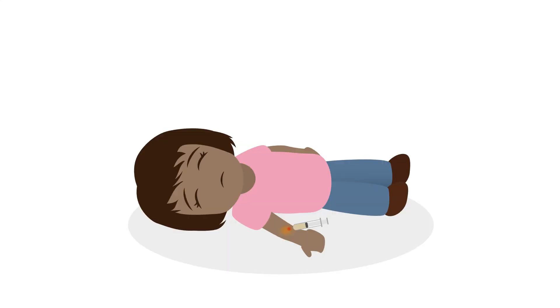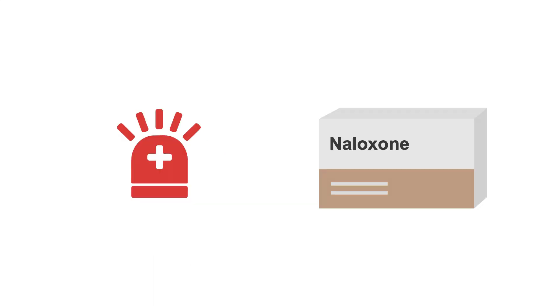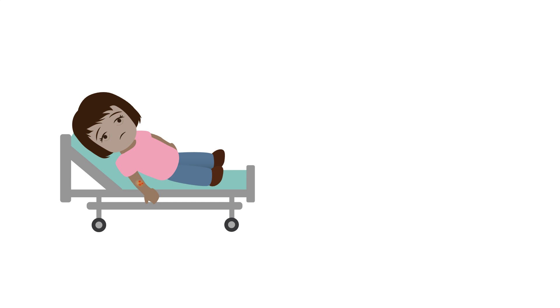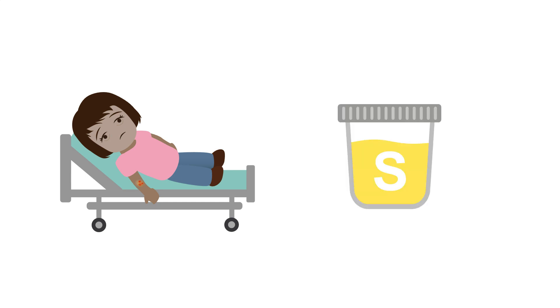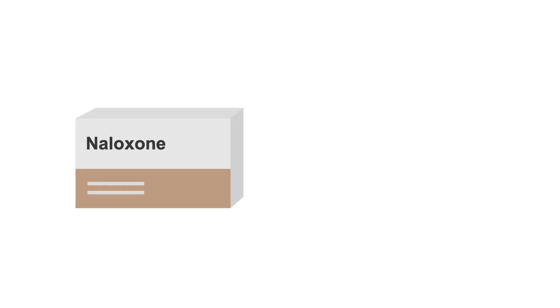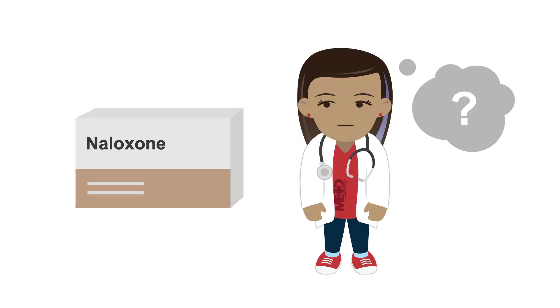Imagine a patient found unconscious at home with a needle in her arm. EMS arrives and they successfully arouse her with naloxone. She's brought to the emergency room, where she eventually provides a urine sample. But lo and behold, the urine opiate screen is negative. We just used an opioid antagonist, naloxone, to successfully wake her up. So how is it possible that there aren't any opiates in the urine?